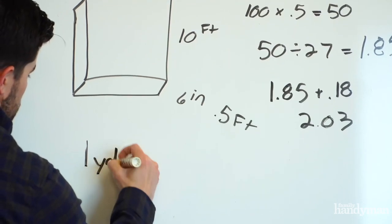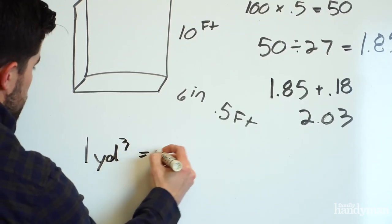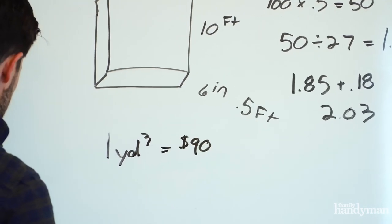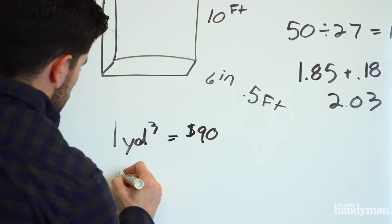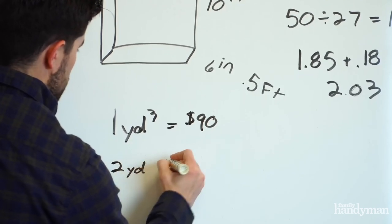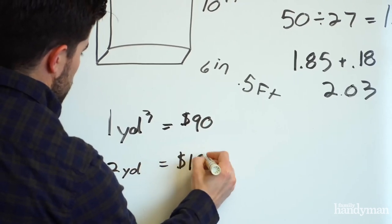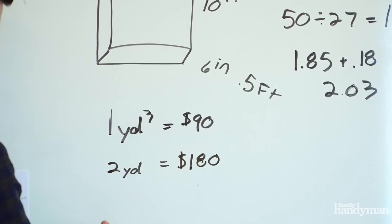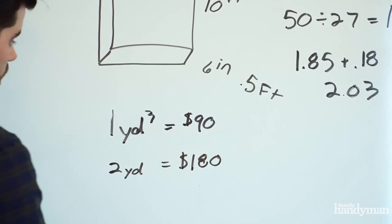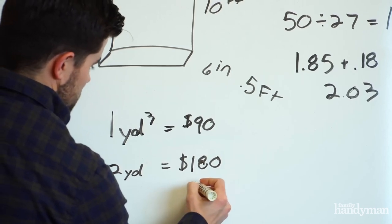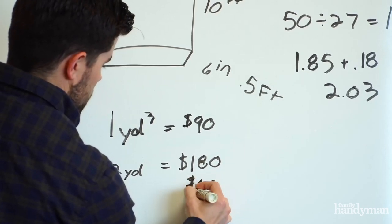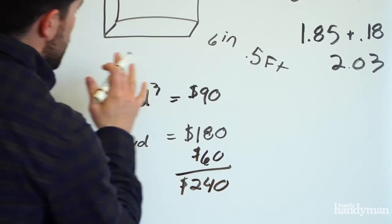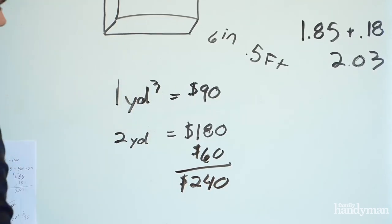One cubic yard of concrete is gonna cost you about $90 depending on where you're at regionally. We need two, so two yards is gonna equal $180. Now the concrete needs to get there so there's likely gonna be a delivery fee, around $60 or so. So you're looking at around $240 for a 10 by 10 foot slab that's six inches deep.